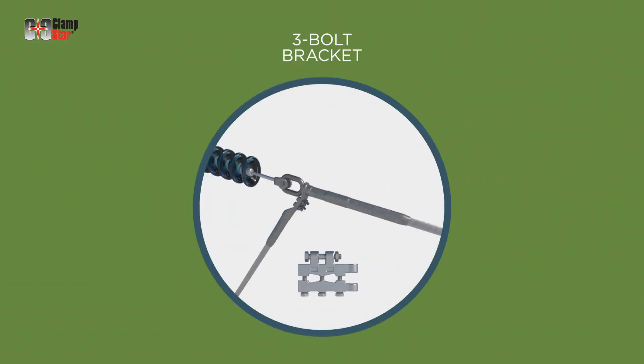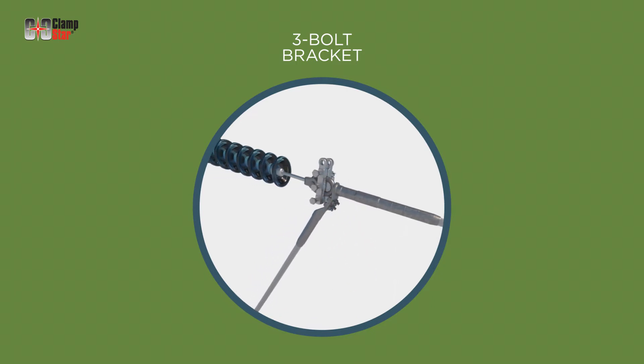Three-bolt universal eye brackets are designed to be installed on either vertical or horizontal configurations. This is the proper attachment method for a three-bolt universal eye bracket in a vertical orientation. Tighten the center bolt first and alternate the tightening sequence in the outer two bolts to achieve an evenly distributed clamp load.